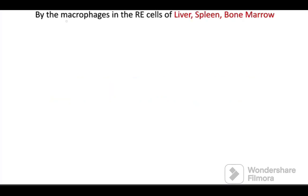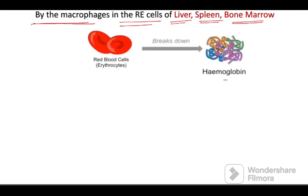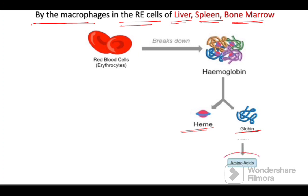Hemoglobin degradation is mainly done by the macrophages present in the reticuloendothelial cells of liver, spleen, and bone marrow. After their 120 days of lifespan, RBCs undergo lysis to release hemoglobin. This hemoglobin has heme and globin. The amino acids present in the globin chain enter the amino acid pool of the body so that they get reutilized for different purposes.